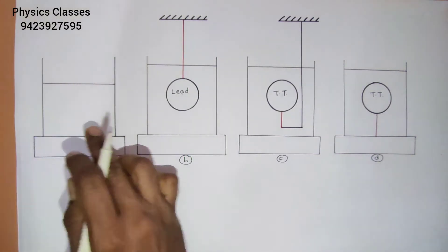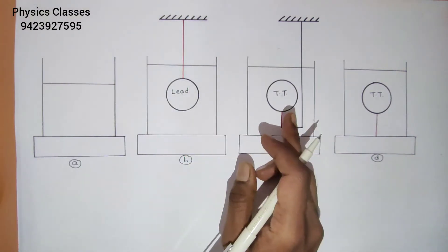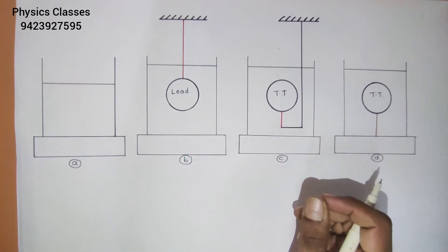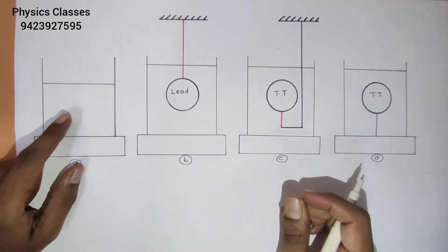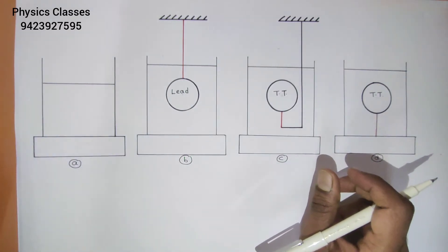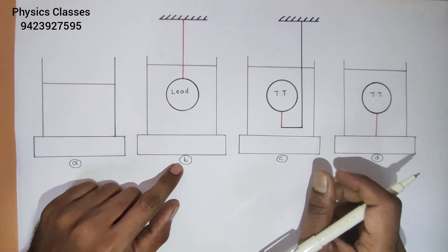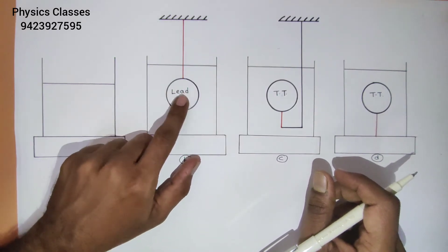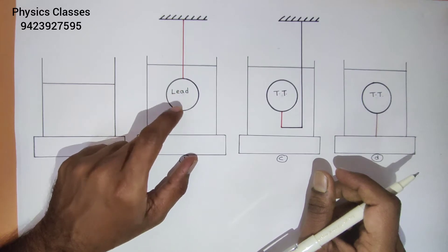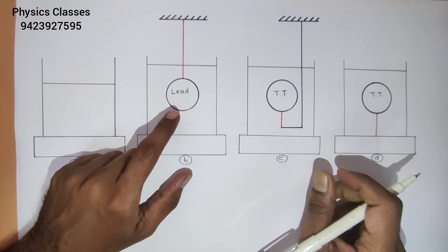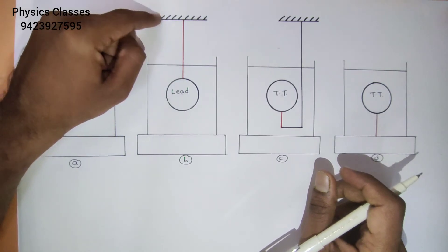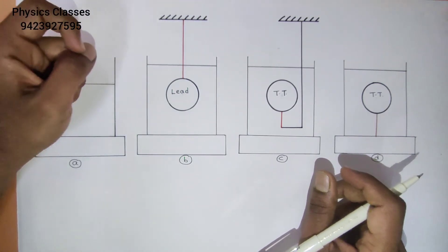There are four identical containers kept on weighing machines. In each of them, the same amount of water is filled. In part B, a lead ball is immersed in the water. As the density of lead is greater than the density of water, a string is attached at the top of the ball and the other end of the string is attached to a rigid support.